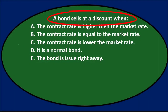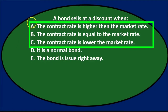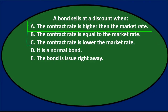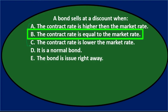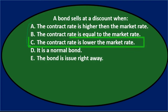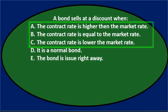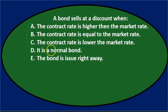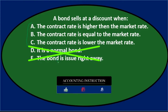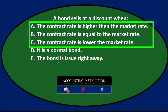Notice that options A through C are very similar — each one differs by only one word. A says the contract rate is higher than the market rate, B says equal, and C says lower. Because these three are nearly identical except for one word, we can likely eliminate D and E right away.